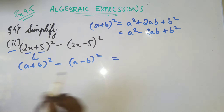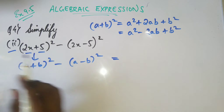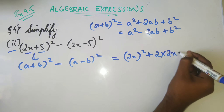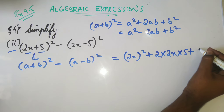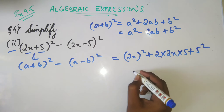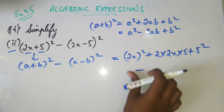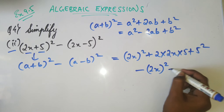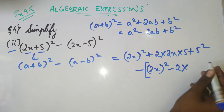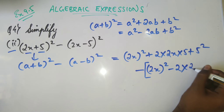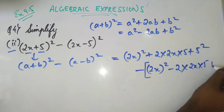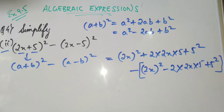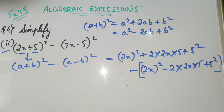Here a = 2x and b = 5. So we apply (a + b)²: a² + 2ab + b², which gives us the expansion for (2x + 5)². Then minus (a - b)²: we put a bracket — minus (a² - 2ab + b²) — for (2x - 5)². Now we open the bracket.